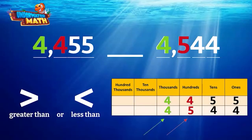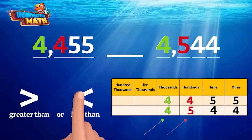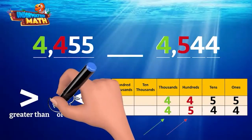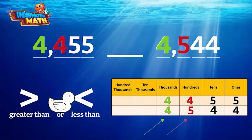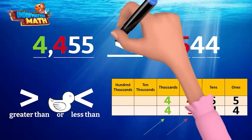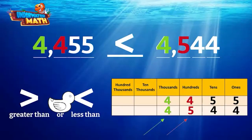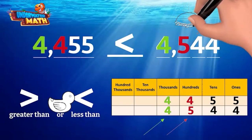All we need to do now is choose the symbol that fits this comparison. The way I like to remember which symbol to use is by thinking of them like the mouth of a duck. The duck always wants to eat the number with the greatest value, so the mouth will always be open towards the bigger number. This means we will use the less than symbol for our comparison, so our duck can eat 4544 yummy hamburgers.